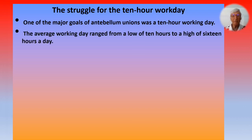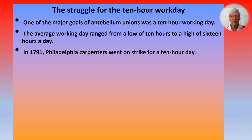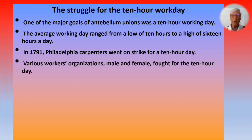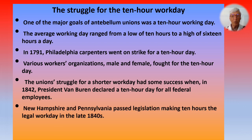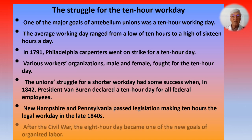One of the major goals of antebellum unions was a 10-hour working day. The average working day ranged from a low of 10 hours to a high of 16 hours. In 1791, Philadelphia carpenters went on strike for a 10-hour day. Various worker organizations, male and female, fought for the 10-hour workday, and New Hampshire and Pennsylvania eventually passed legislation making 10 hours the legal workday in the late 1840s. After the Civil War, the eight-hour day became the new goal of organized labor.